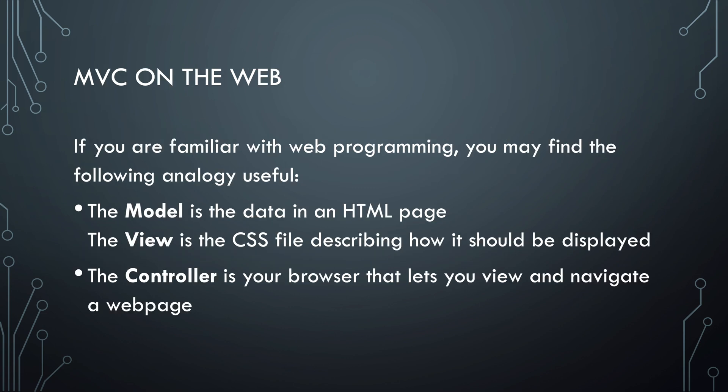When you look at a simple client-side only website, the model is the data in an HTML page. The view is the CSS file describing the style of all the components and how they should be displayed. The controller is your browser that handles your interactions with the web content.